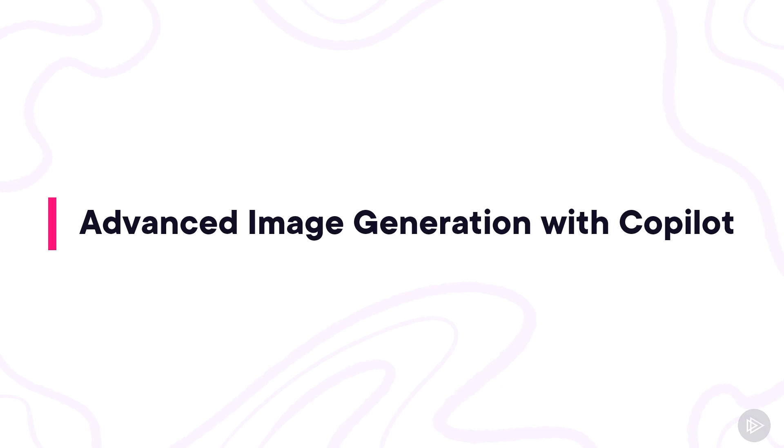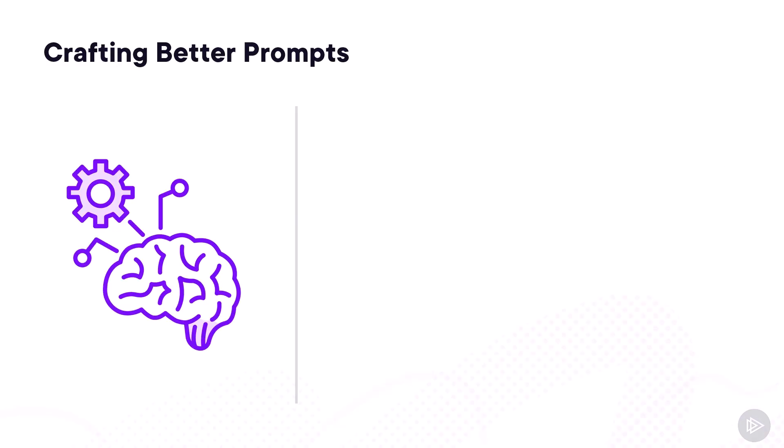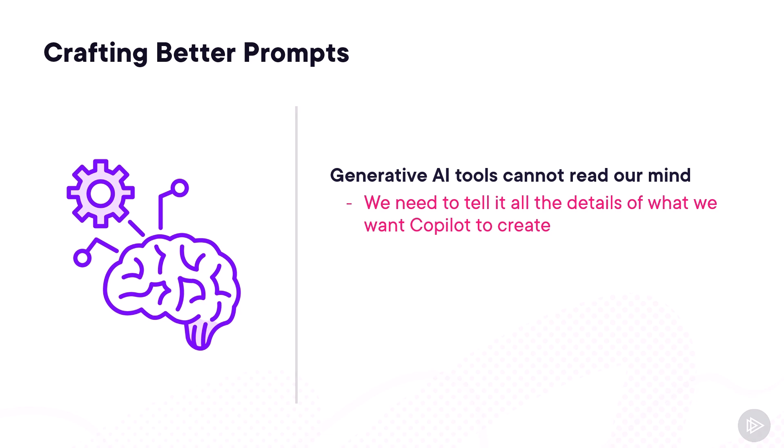With the first few examples done, let's take our image generation skills to the next level and create better images. But how do we do this? The answer is we need to craft better prompts, since generative AI tools cannot read our mind. At least for now, we need to tell them all the details of what we want them to create — in our case, Microsoft Copilot.